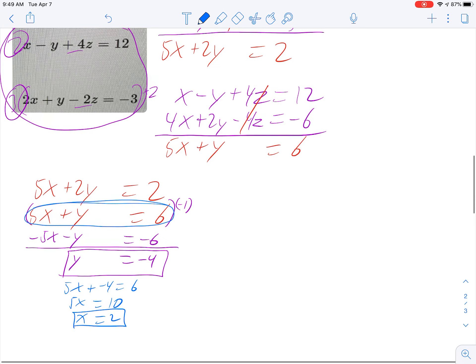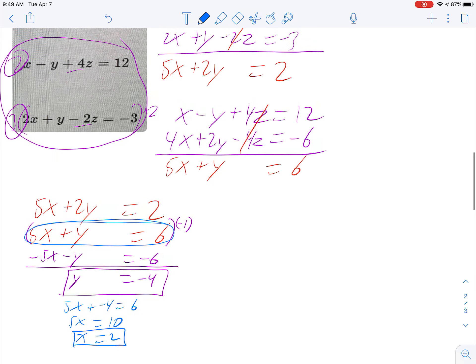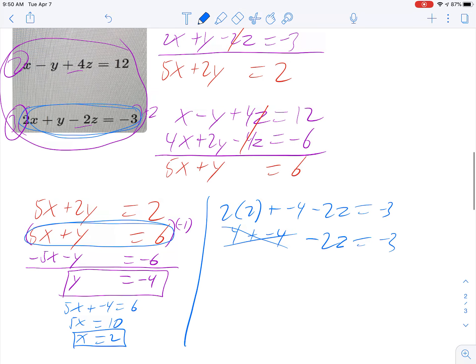So I've got x and y. Now we just need z. So I'm going to go back to the original and pick one of the original problems. I'll just pick this one just for no particular reason. So 2 times the x, which I now know is 2, plus y, which is negative 4, minus 2z equals negative 3. And let's clean that up and solve for z. 4 plus negative 4. Oh, look at that. It cancels right out. Are you kidding me? Does it get any easier? Minus 2z equals negative 3. Divide both sides by negative 2. And we get z equals negative 3 over negative 2, which is 3 halves. Or you could write that as 1.5.